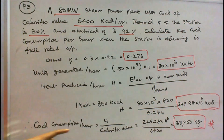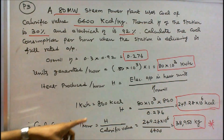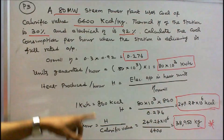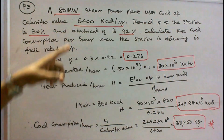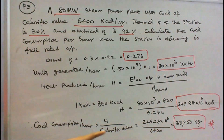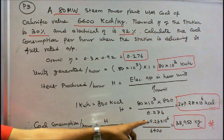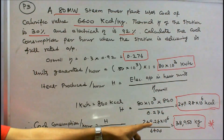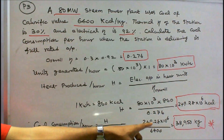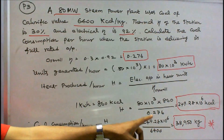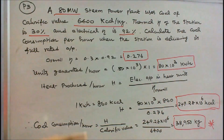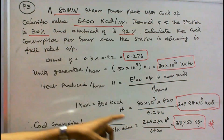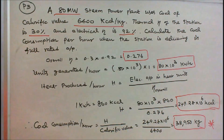Therefore, coal consumption per hour = heat produced ÷ calorific value. Calorific value is given as 6400. So coal consumption = (249.28 × 10⁶) ÷ 6400 = 38,950 kg. The coal consumption per hour is 38,950 kg.